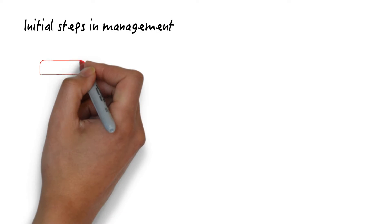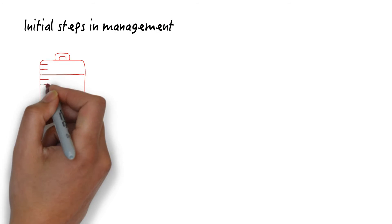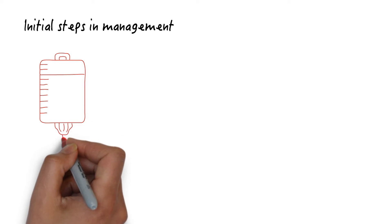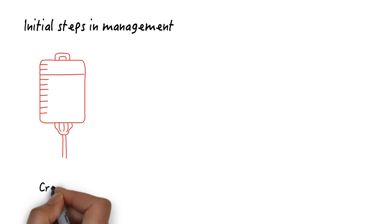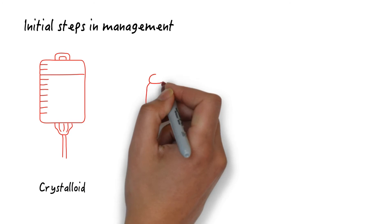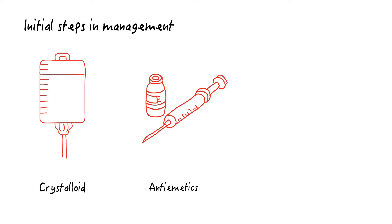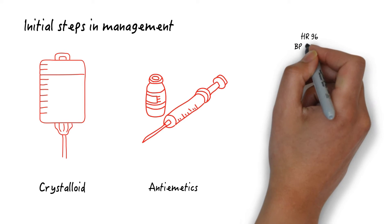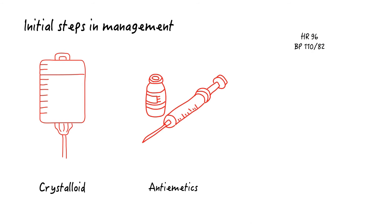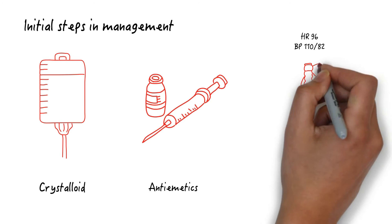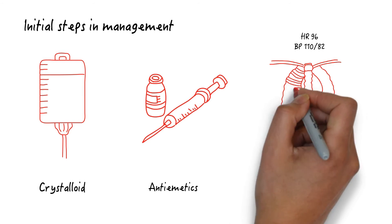Back to our patient. What are the initial steps in management? First you should provide IV fluid resuscitation through two large bore peripheral IVs. Antiemetics can be provided as well. You do this and her heart rate improves to 96 beats per minute and blood pressure to 110 over 82. She stops vomiting but continues to complain of abdominal pain.